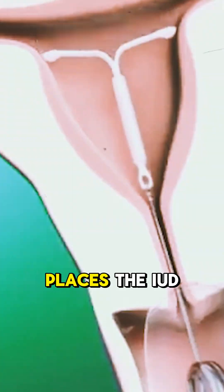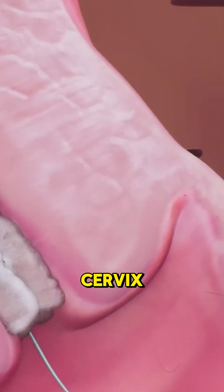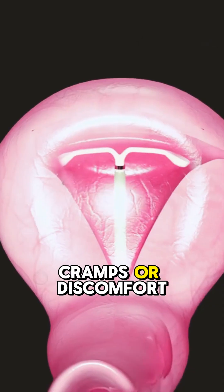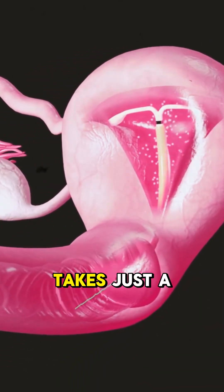Next, a thin inserter places the IUD carefully through the cervix into the uterus. You might feel cramps or discomfort, but it usually takes just a few minutes.